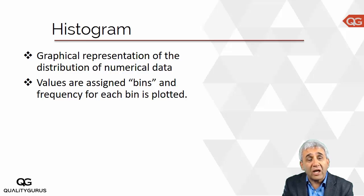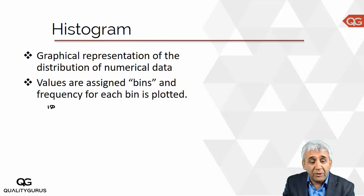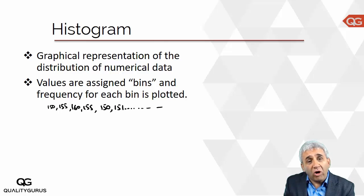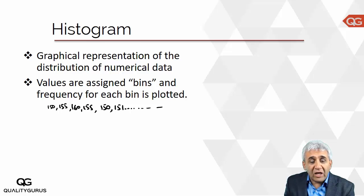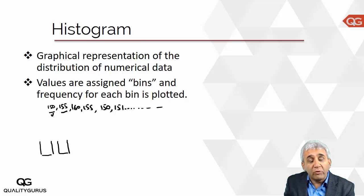You go to a school and measure the height of all the students and note it down — so you have values like 150, 155, 160, 155 again, 150, 151, and so on. Once you have all this information, you want to plot a histogram. The first thing to do is create bins — bins are like buckets into which you put each of these numbers. Where does 150 go? Where does 155 go?